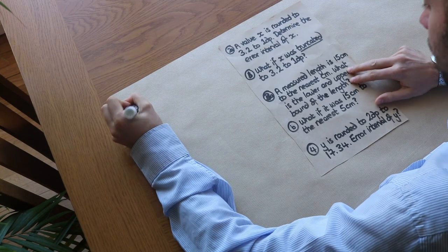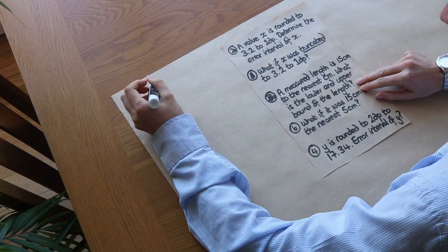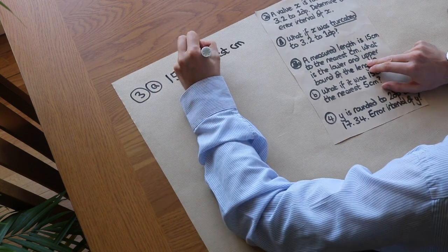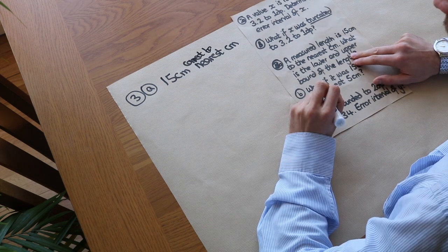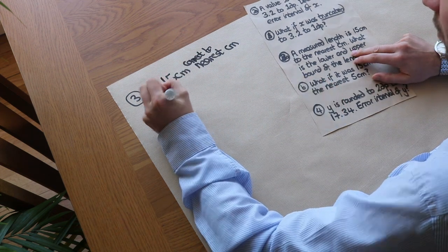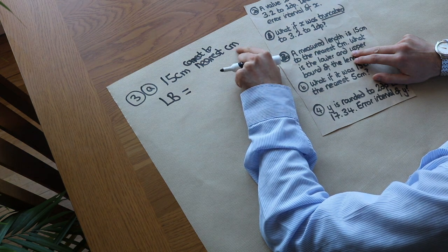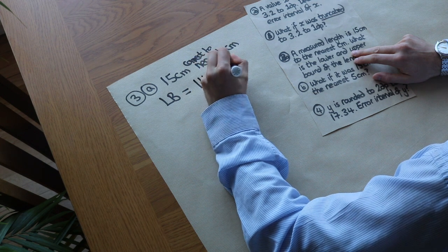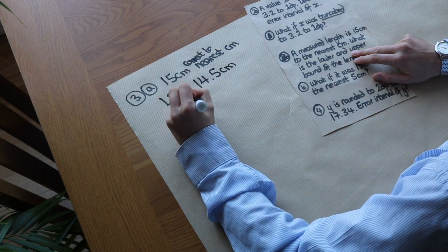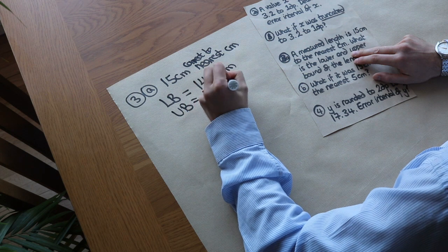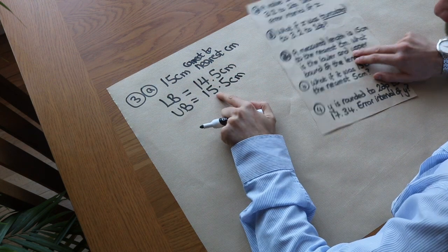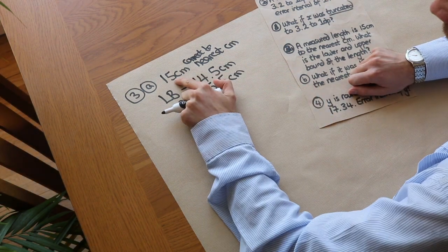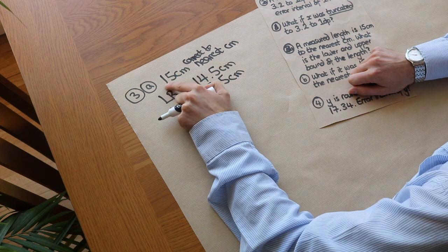A measured length is 15 to the nearest centimetre. What is the lower and upper bound of the length? It's 15 centimetres correct to the nearest one centimetre, so half the accuracy is 0.5. The lower bound is 15 minus 0.5, which is 14.5 centimetres, and the upper bound is 15 plus 0.5, which is 15.5. We can use the trick: put a 5 on the end for 15.5, and reduce the last digit by 1 and add a 5 to get 14.5.